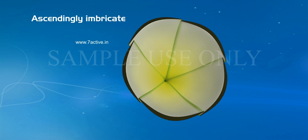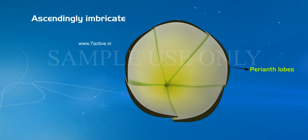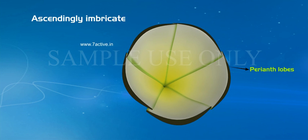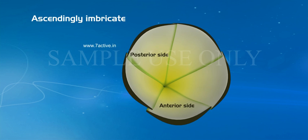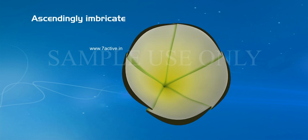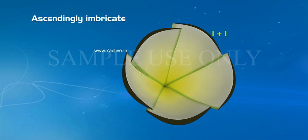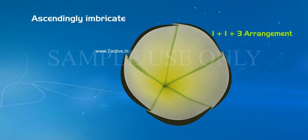Ascendingly Imbricate Estivation: Each perianth lobe overlaps the perianth lobes present posterior to it. The overlapping of perianth lobes appears in posterior and anterior direction. In this, one perianth lobe is completely outside and one is completely inside. The remaining three have one margin inside and one margin outside. It is called a one plus one plus three arrangement. Example: Corolla of Caesalpiniaceae.